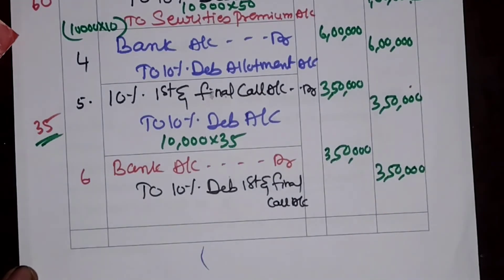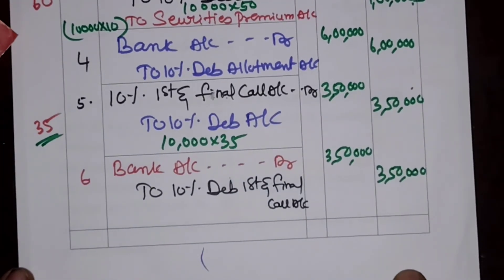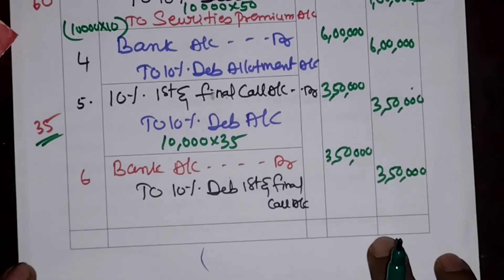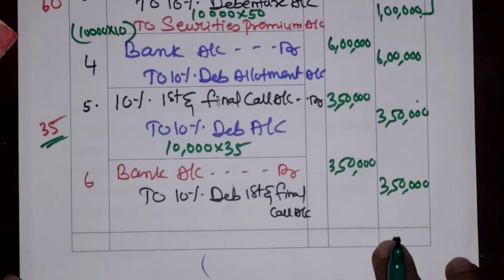Learn this concept well as it will be very useful for the next topic — issue of debentures at discount. In the case of discount, only one change will appear in the allotment entry; the remaining five journal entries will be the same. Thank you very much for watching. Please subscribe to my channel, press the bell icon, and if you like my explanation please like the video.